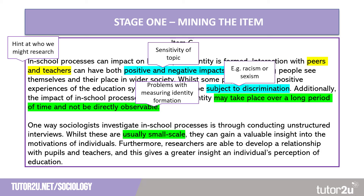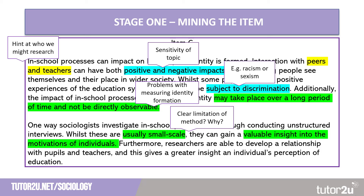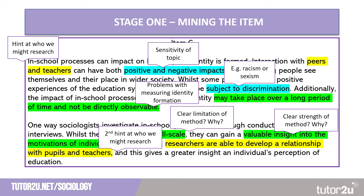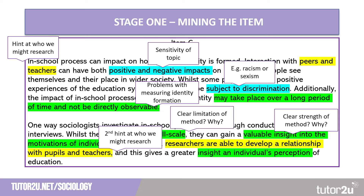Moving to the second paragraph, we have the hook that interviews are small scale — this can be a benefit or a limitation depending on what type of data you want. They can also gain a valuable insight into the motivations of individuals. If we think theoretically, who is going to prefer that type of method and what type of data might it give us? Furthermore, researchers are able to develop a relationship with pupils and teachers — another hint at who we might be researching — and gaining a greater insight into perception of education links to theoretical strengths like Verstehen and validity. We've highlighted eight hooks in total that can help us with this essay.